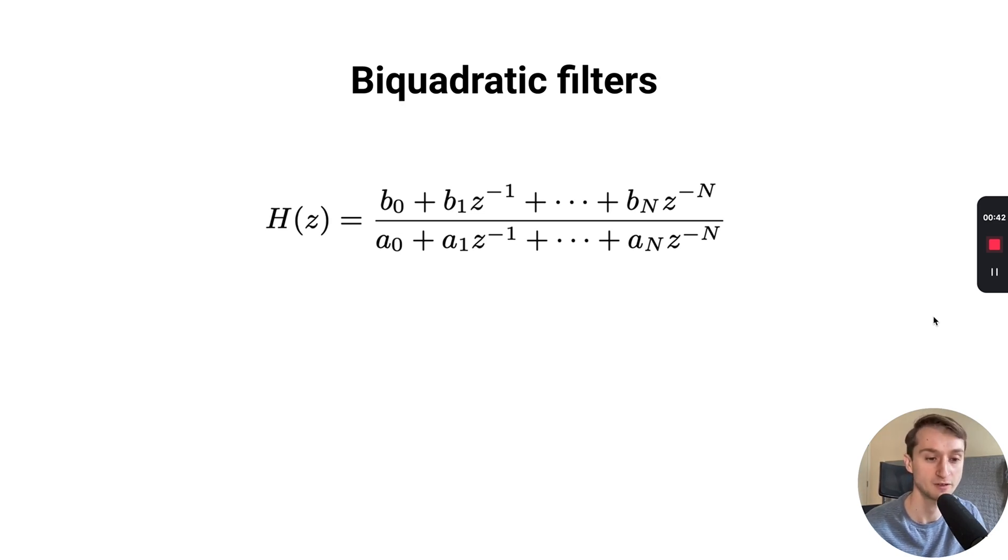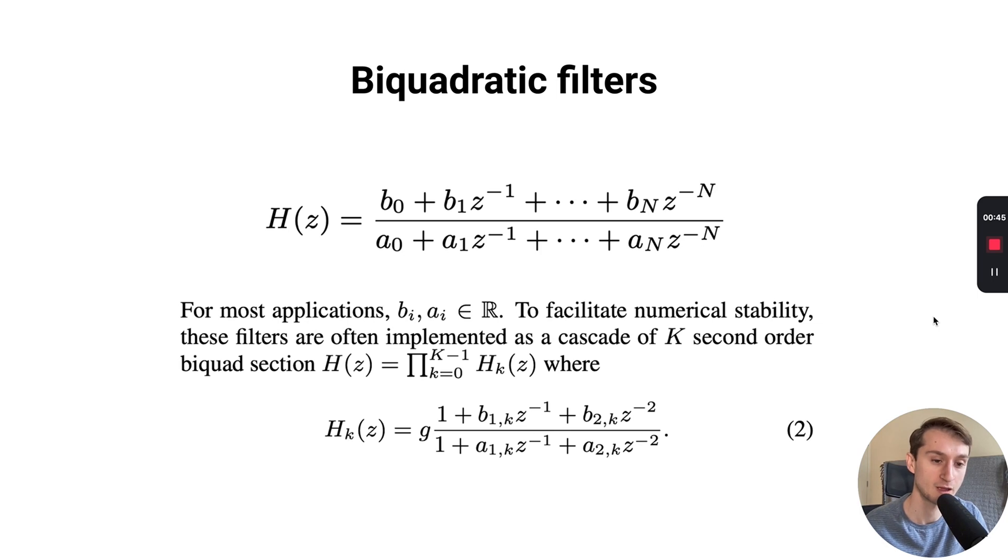Additionally, to facilitate numerical stability, the filters are often implemented as a cascade of k second order biquad filter sections. We can see that here in the bottom transfer function, where each of them is simply a second order filter, and we can compute the overall response by taking the product of their magnitude responses.